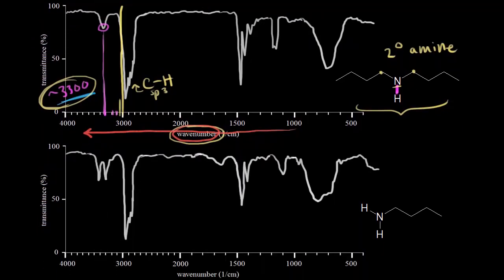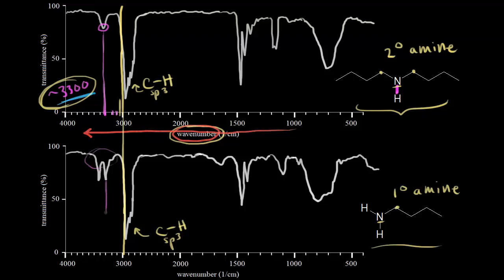This is a primary amine — butylamine — where the nitrogen is bonded to one carbon. Let's analyze the IR spectrum. Drawing a line around 3,000, we know the region inside is the carbon-hydrogen bond stretch for an SP3 hybridized carbon. Looking just past that in the bond to hydrogen region, we get two signals this time. One signal at approximately 3,300, and then another signal at a slightly higher wave number — approximately 3,400. So we know this is where we expect to find the nitrogen-hydrogen bond stretch, but we get two signals and need to figure out what's going on.